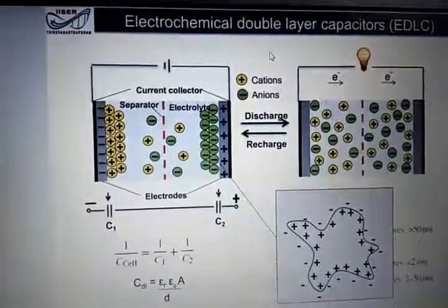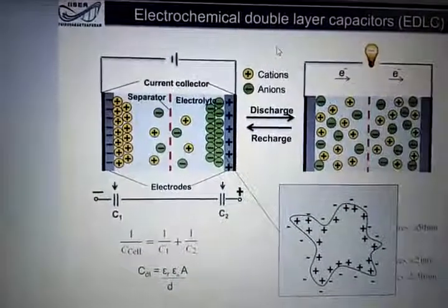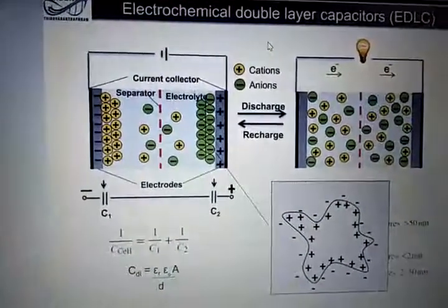It is also called as an electrochemical double layer or electric double layer. And these kind of capacitors we typically call as electric double layer capacitors.